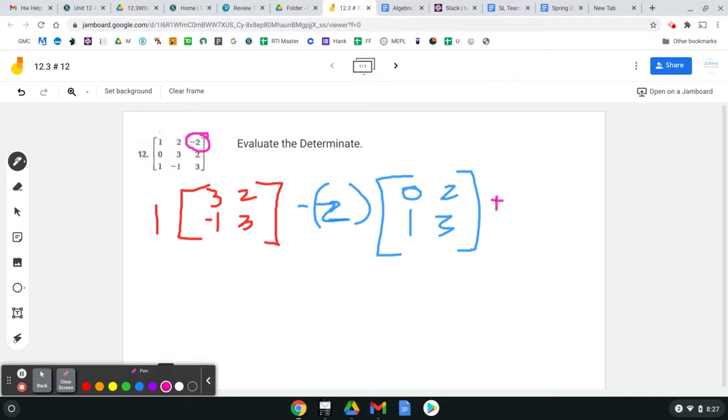so plus negative two times, and then, again, cross those out and those out. And you're left with zero, one, three, negative one.